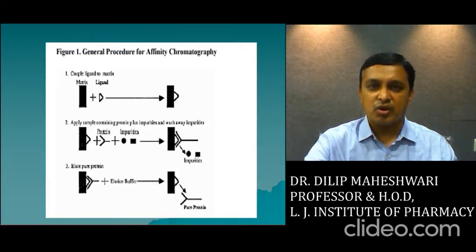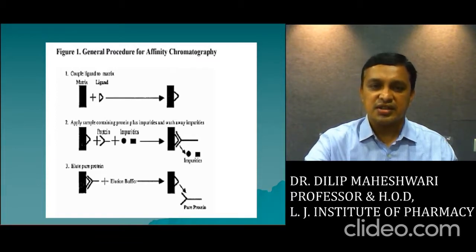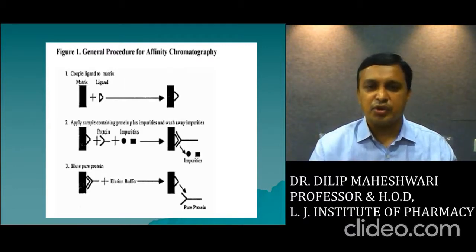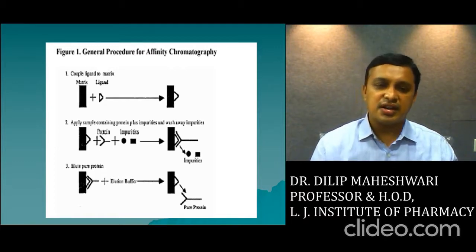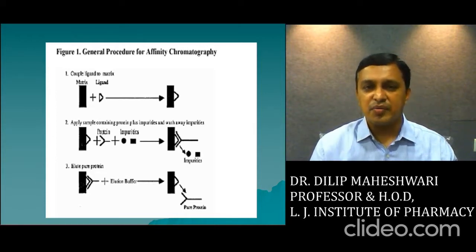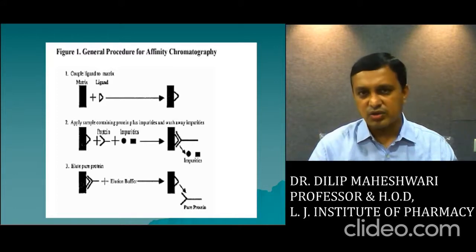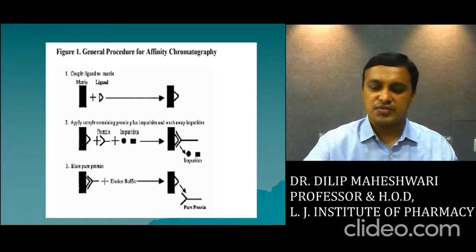This is the schematic diagram of affinity chromatography. In the first step, the matrix plus ligands create an environment in the column as the stationary phase. In the second step, when you apply the sample components, the proteins and impurities present in the mixture pass through this matrix; your protein of interest makes a complex with the ligands while the remaining impurities are eluted out. In the third step, displacement agents or elution buffer are used, and your pure proteins are isolated and extracted at the bottom of the column.